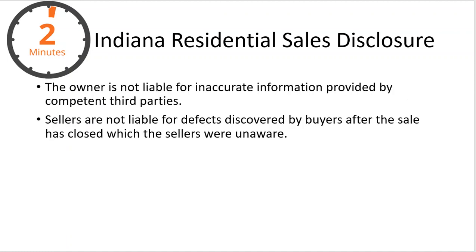The owner is not liable for any inaccurate information provided by any third party. So if a roofer tells him the roof's good, then he's not liable for that. He's also not liable for anything that is discovered by the buyers after the sale has closed in which the seller was unaware. The seller truly has to be unaware of any of the defects. If the seller was aware and didn't disclose it, that's a whole other issue.